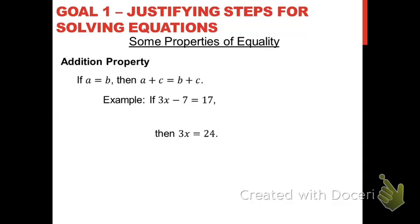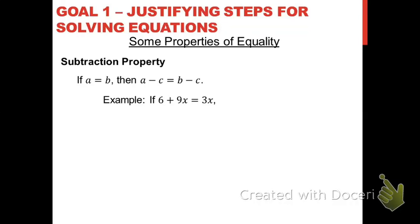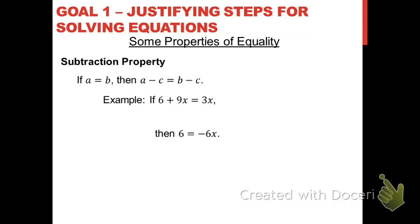There's also the subtraction property of equality: if you have an equation and subtract the same value c from both sides, the two expressions are still equal. For example, if you had 6 plus 9x equals 3x, to get all variable terms on the same side you would subtract 9x from both sides. The fact that 6 equals negative 6x is justified by the subtraction property of equality. Make sure when you use an addition or subtraction property of equality, you added or subtracted the same value from both sides, not on a single side.